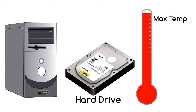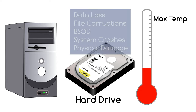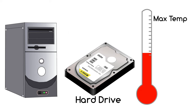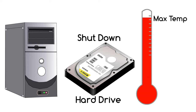If any type of hard drive overheats this can lead to data loss, file corruptions, a blue screen of death, system crashes, or damage to the hard drive. Some hard drives these days have safeguards so that when they reach a critical temperature their performance is throttled before there are any problems. If temperatures continue to rise even with throttling, the computer may shut down to protect the drive from damage.